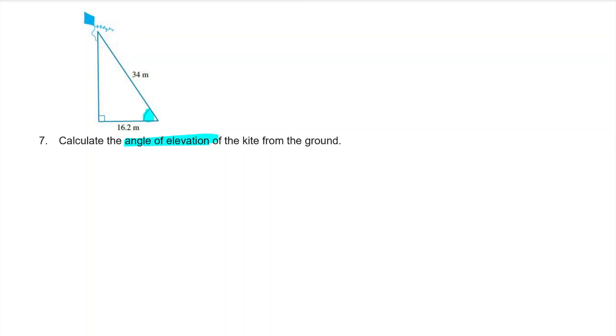So first I'm going to label my sides opposite my angle there. That is my opposite side, and then opposite my right angle is my hypotenuse, and lastly the adjacent.